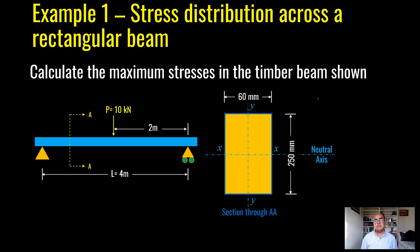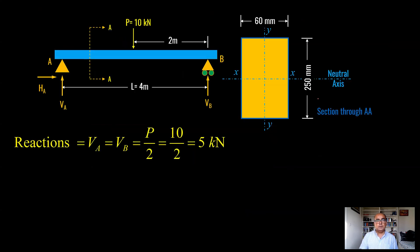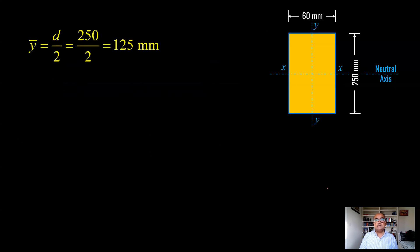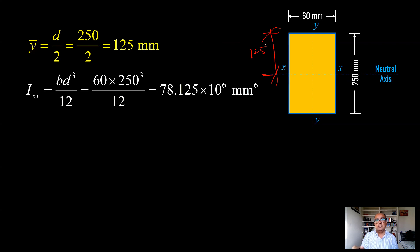Let's solve an example. Calculate the maximum stress in a timber beam with a central point load of 10 kN, a span of 4 metres, a section 60 mm wide and 250 mm deep. The reactions are simply load divided by 2, so 5 kN each. Maximum bending moment for a central point load is P·L over 4: 10 times 4 divided by 4 gives 10 kN·m. Y-bar, the distance from the centroidal axis to the extreme fibre, is D over 2 which is 125 mm. I-XX is B·D³ over 12: with B = 60 and D = 250, we get 78.125 × 10⁶ mm⁴.